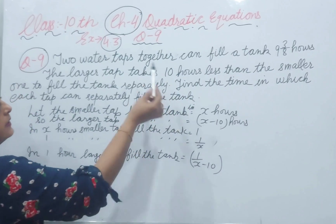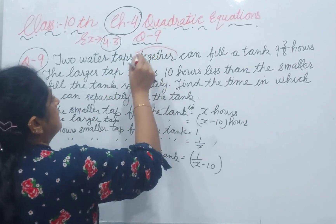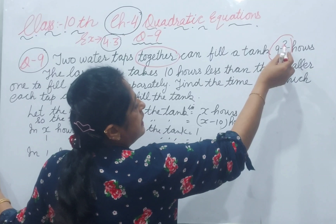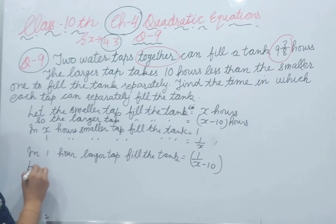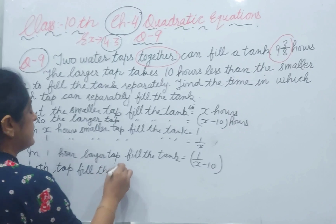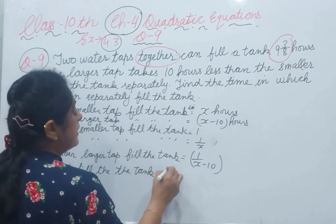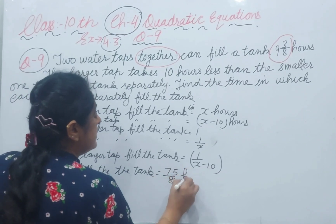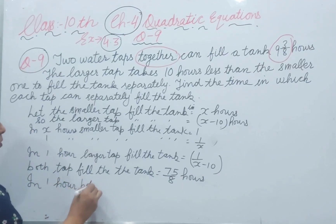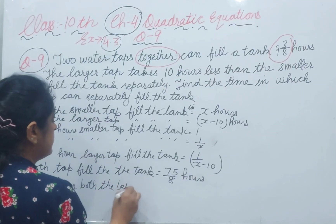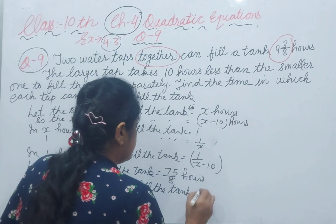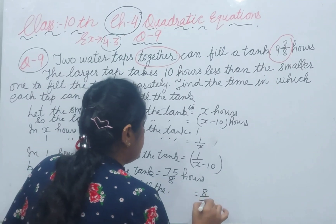Both taps together fill the tank in 9 and 3/8 hours. Converting: 9 and 3/8 equals 75/8 hours. So in 1 hour, both taps together fill 8/75 of the tank.